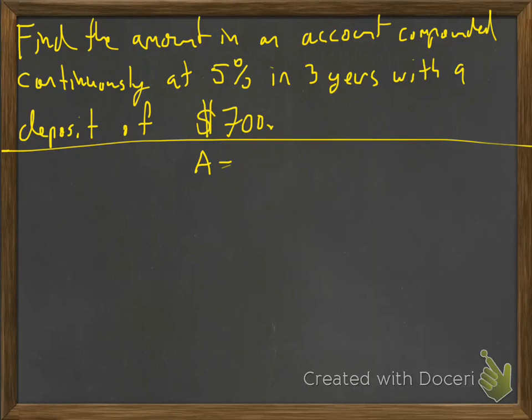So let's take a look. We will write down that problem very fast. If you need to pause the video, you can. They say, find the amount in an account compounded continuously at 5% in three years with a deposit of $700. So I see the magic word continuously, so that means I'm going to use my PERT equation. Amount equals principal E to the RT.